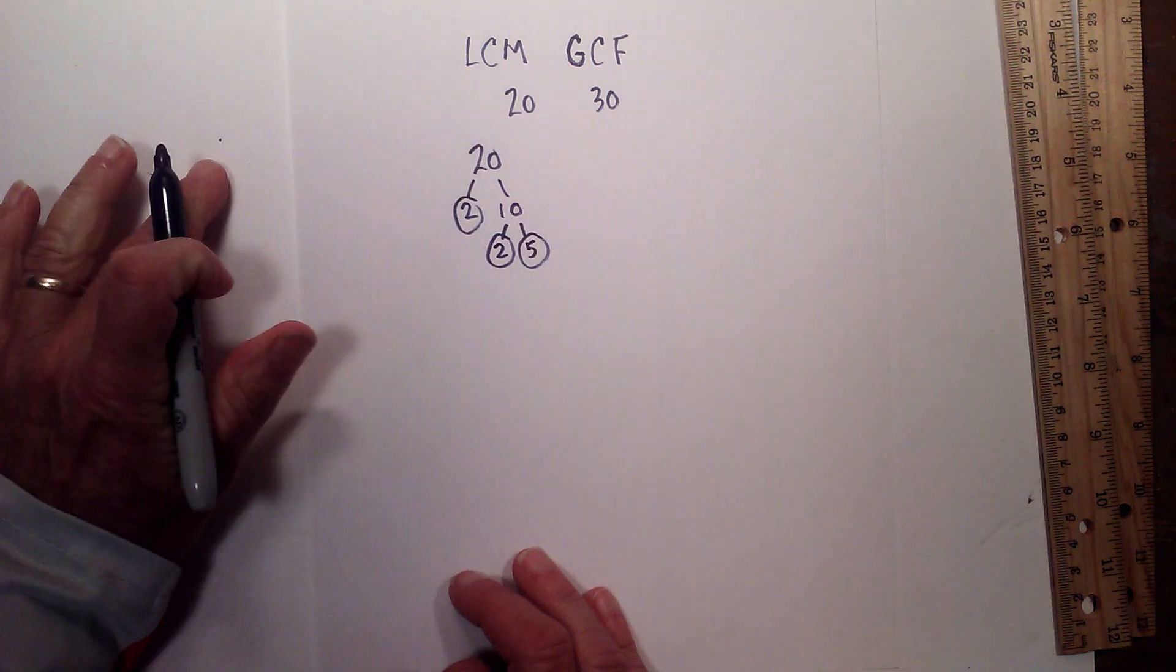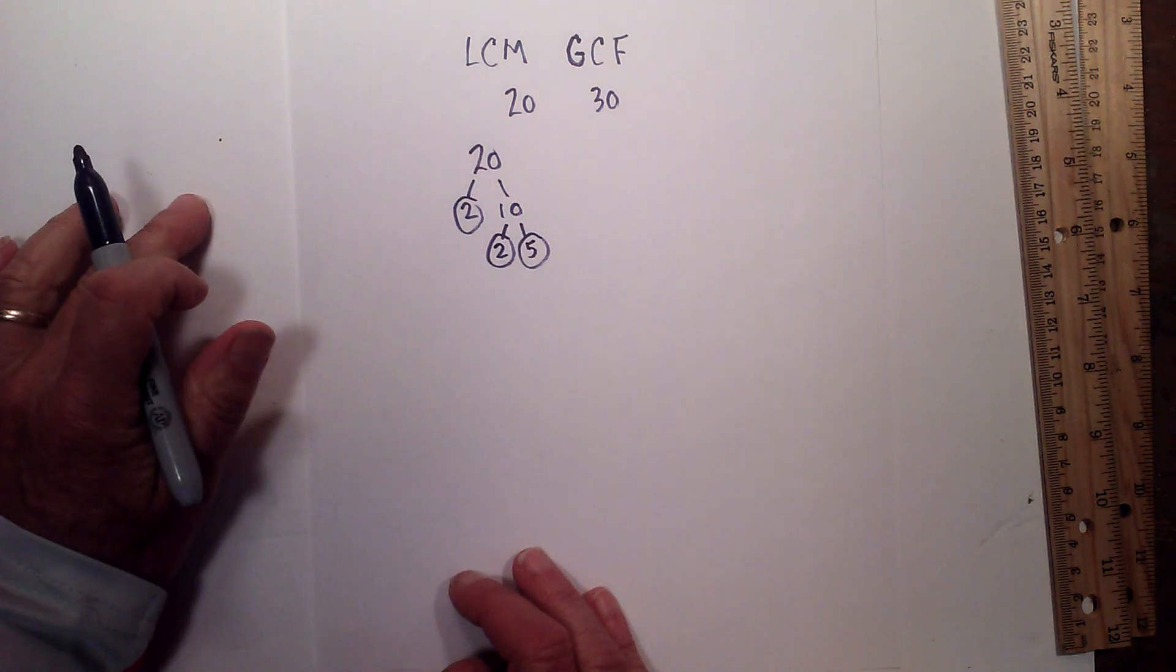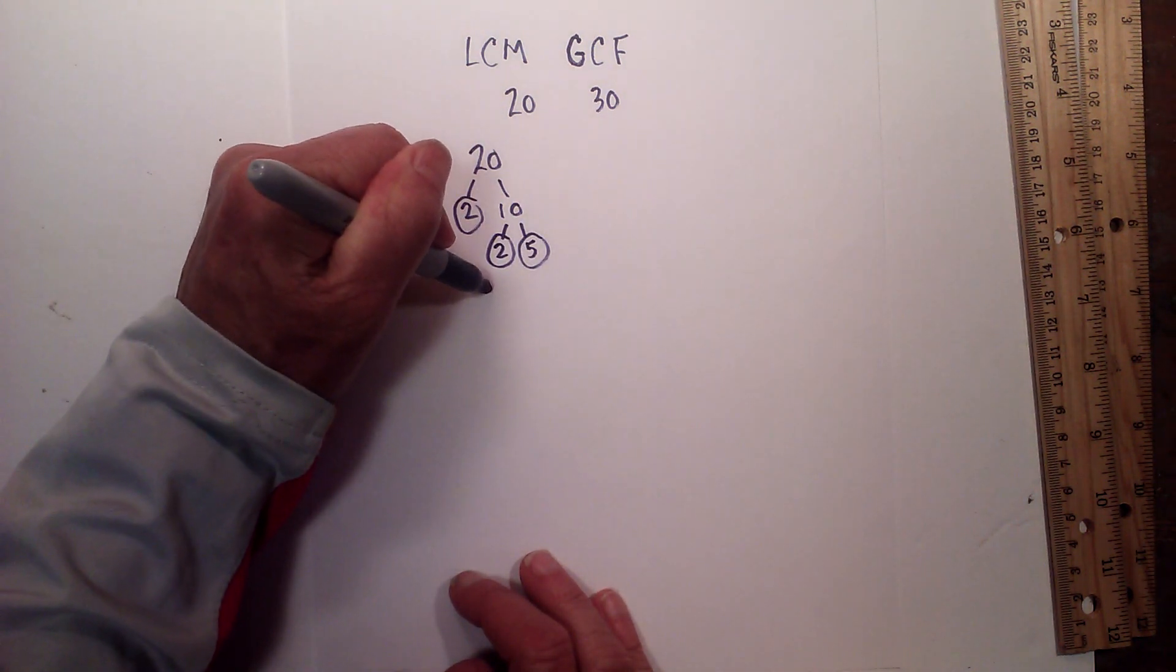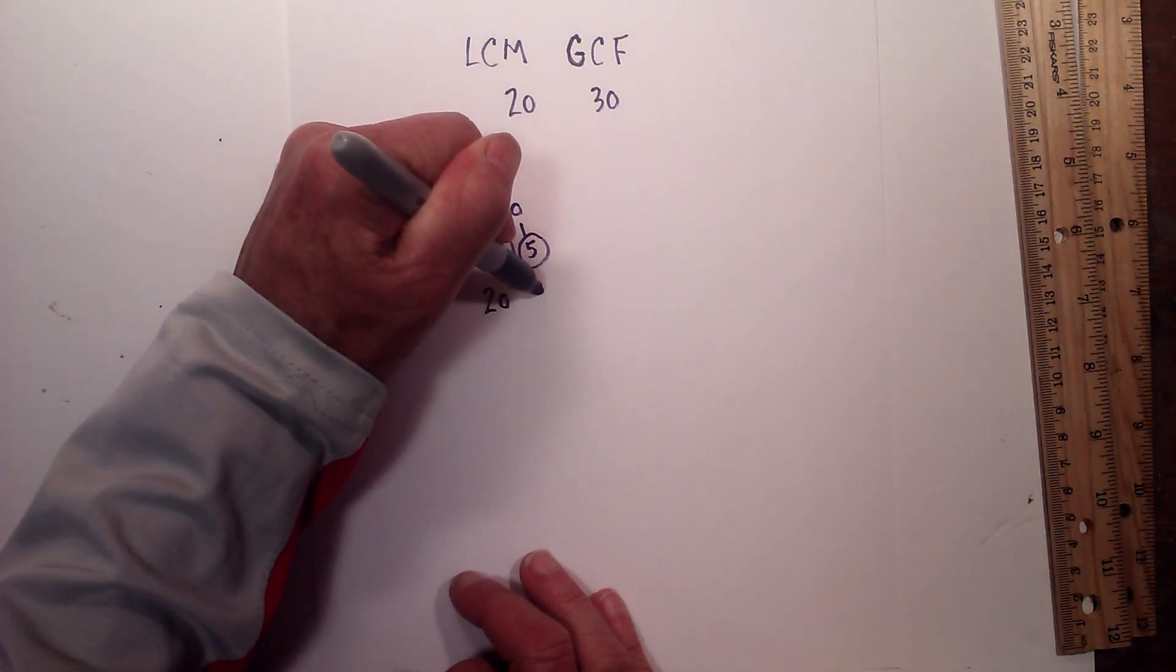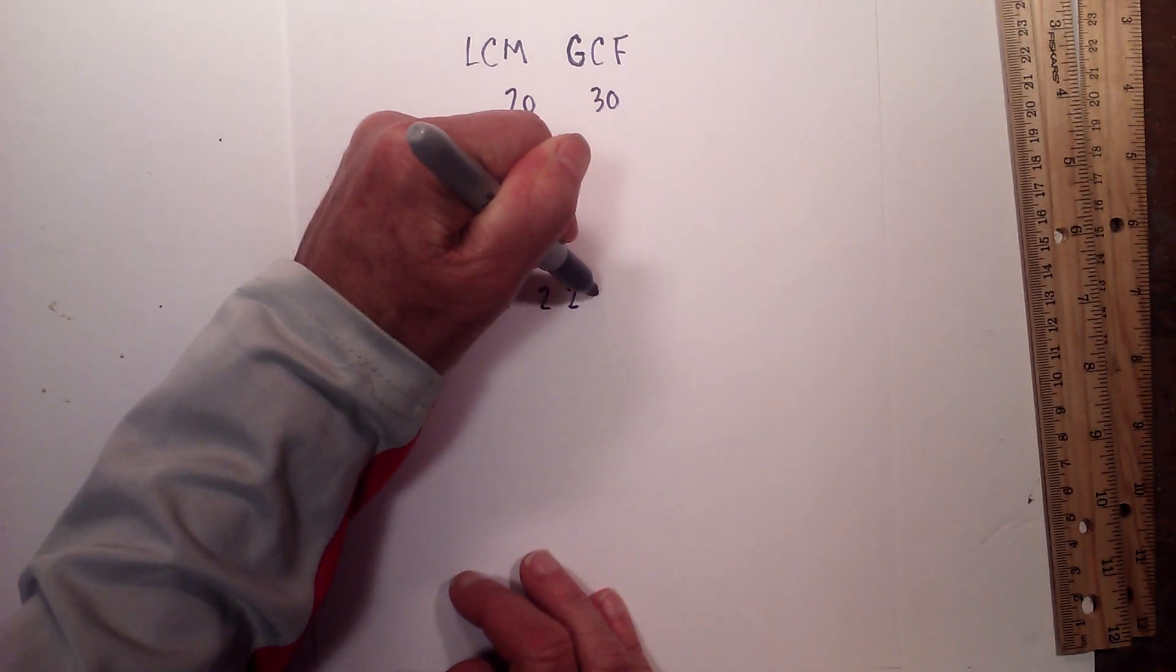Circle both of them because they are prime and I'm now down to prime numbers. So I will write the prime numbers for 20 are 2, 2, and 5.